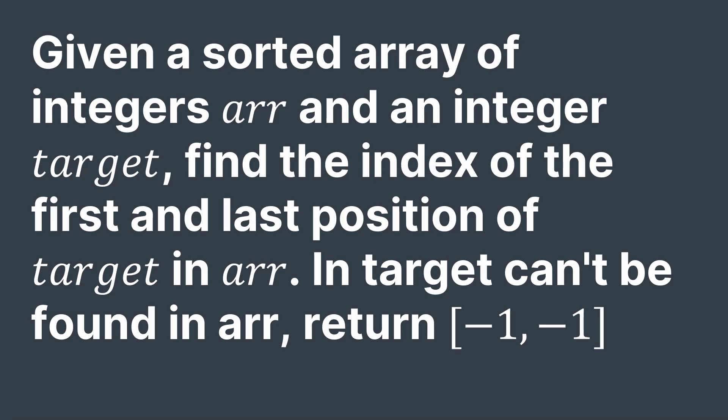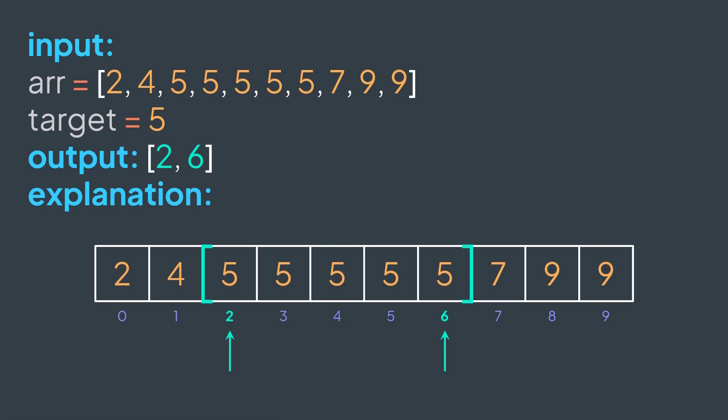For example, if r is [2, 4, 5, 5, 5, 5, 5, 7, 9, 9] and target is 5, the output would be [2, 6], because the first position of target is 2 and its last position is 6.